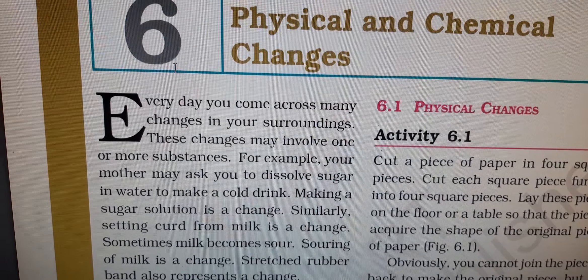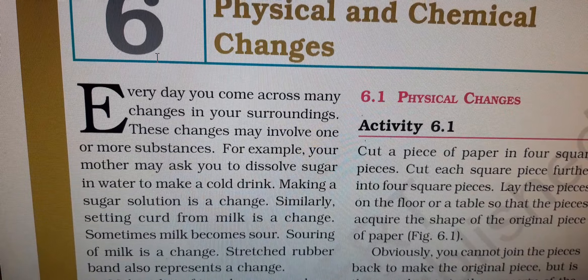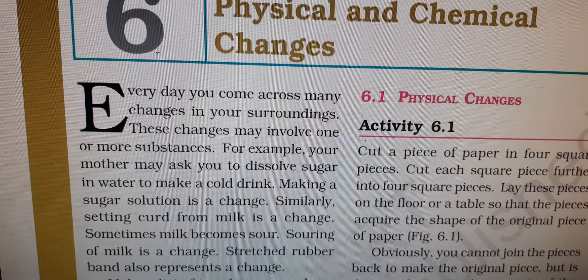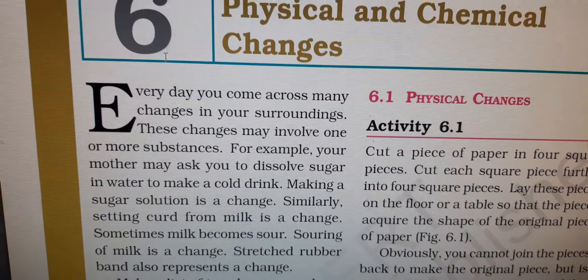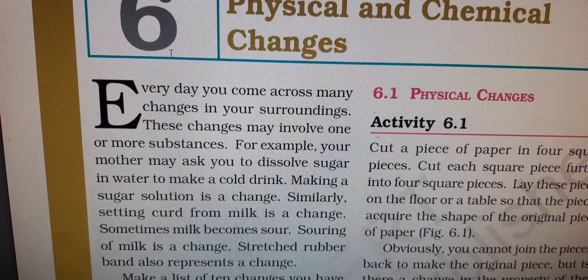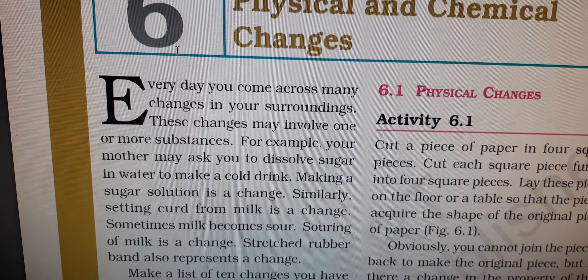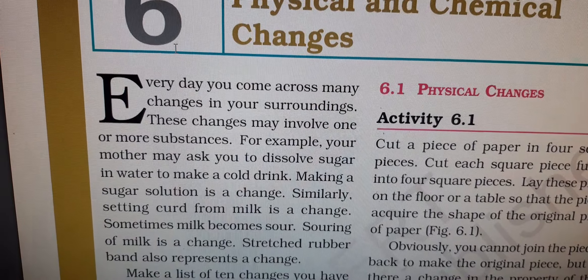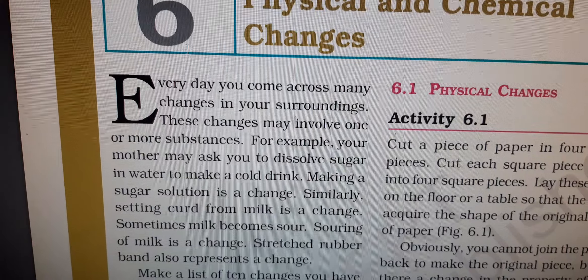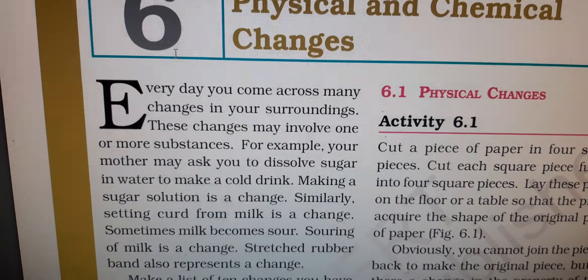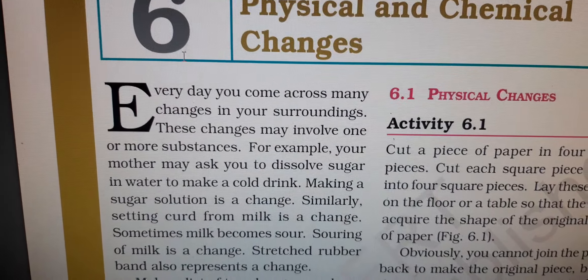Some changes are undesirable — that is not good for you, that is harmful. Like spoilage of food: if the food spoils, that is an undesirable change. So hundreds of changes are occurring around you — some are slow, some are fast, some are desirable, and some are undesirable.